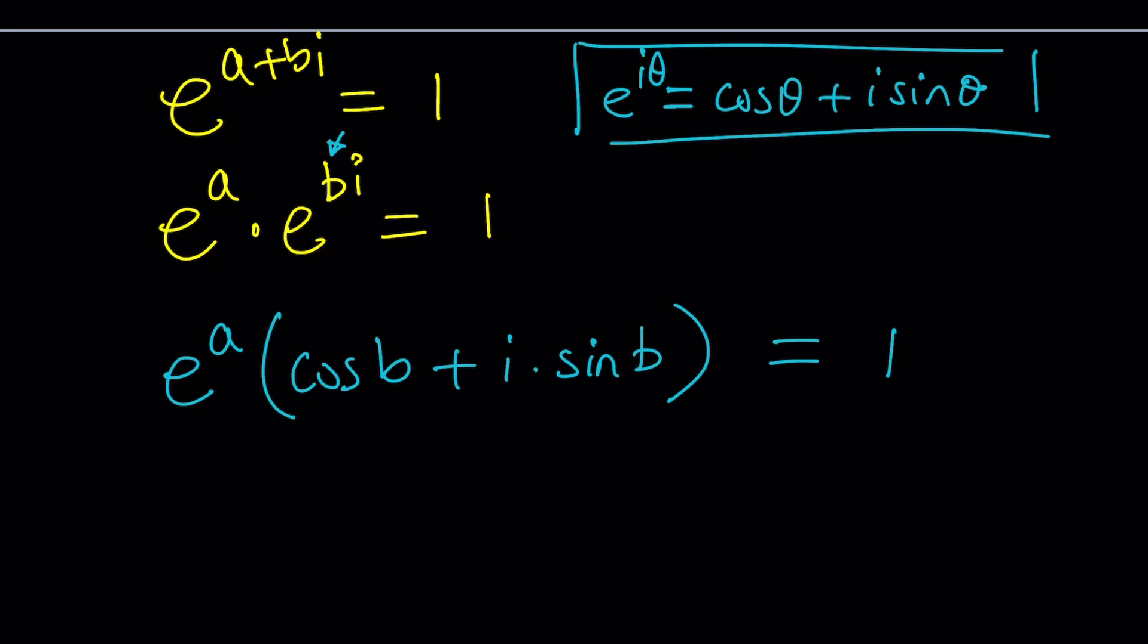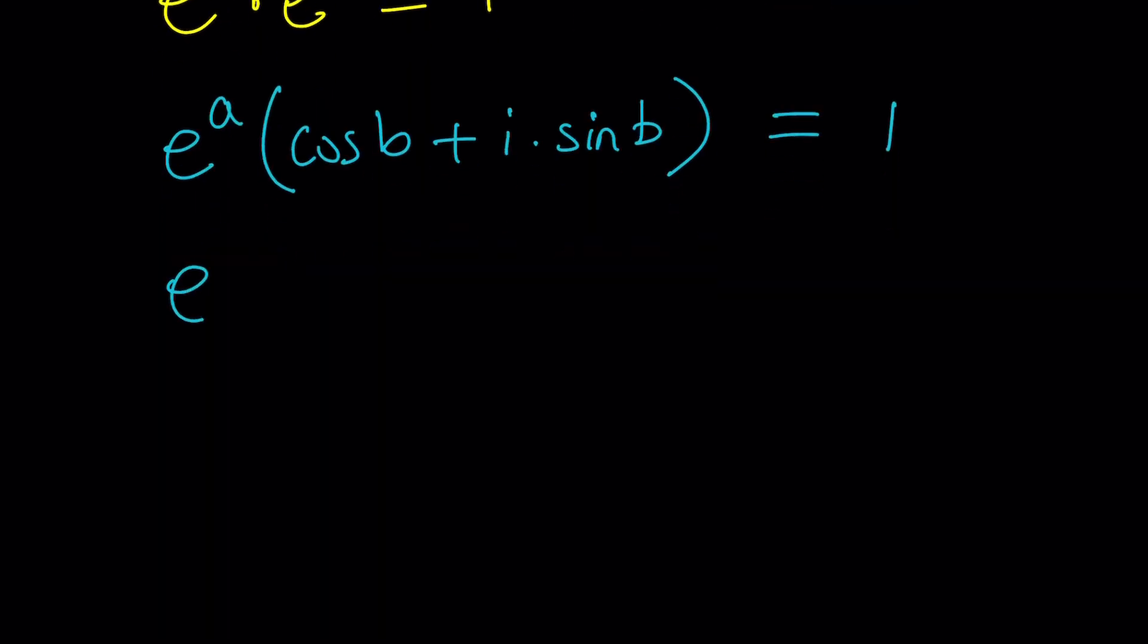Great. Now, e to the A is the modulus, the absolute value. So if they ever ask you z equals A plus B I, what is the modulus of e to the z? The answer is e to the A. Now, how do we solve for z from here? Z is equal to A plus B I, so we need to solve for A and B. That's a system. So let's distribute e to the A cosine B plus I times e to the A sine B. And that equals one.